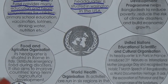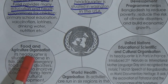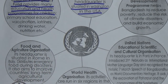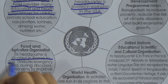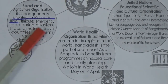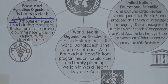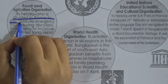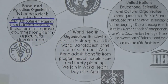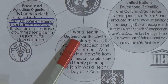FAO stands for Food and Agriculture Organization. Its headquarters is situated in Rome, Italy. The work of FAO is to distribute emergency food during disasters. It also aims to improve a country's long-term agricultural development.